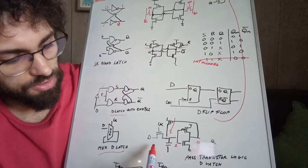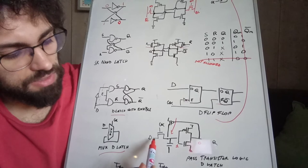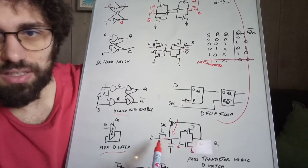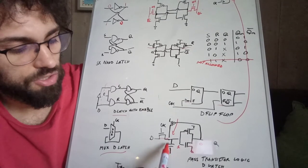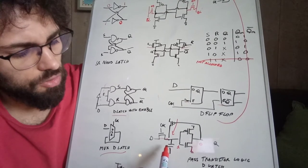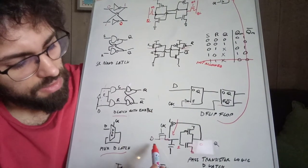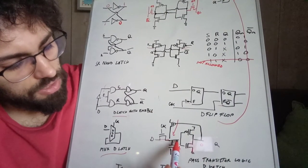But memories can be implemented with this pass transistor logic. So for instance, this is another implementation of the D latch with the pass transistor logic. The problem with pass transistor logic is that we lose part of the signal going to charge this capacitor in this node.